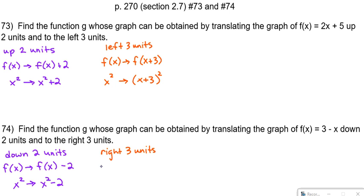And down here, if we're moving right 3 units, if we started with f of x, we would end up with f of x minus 3. Or for example, if we started with x squared, we would end up with x minus 3 squared.